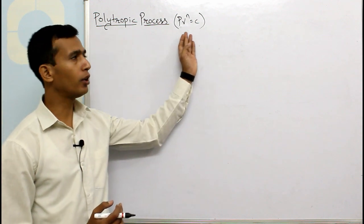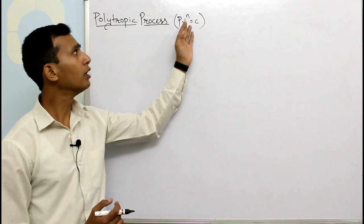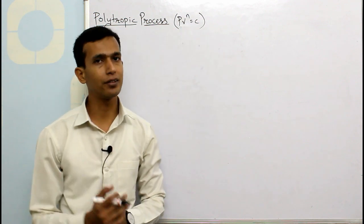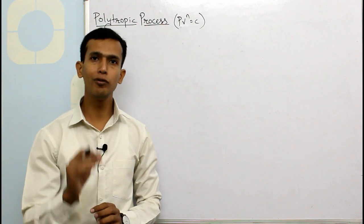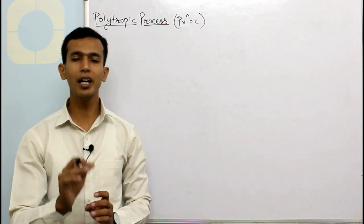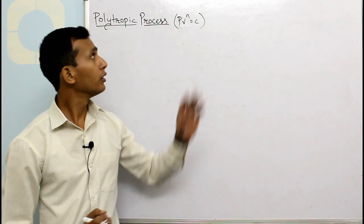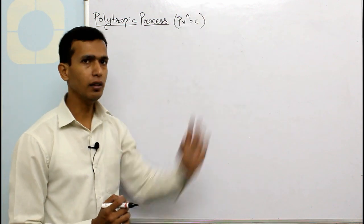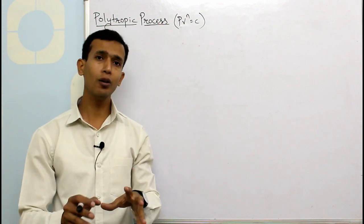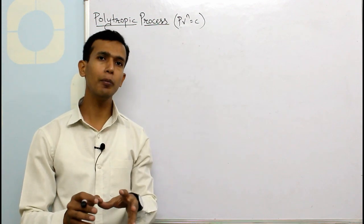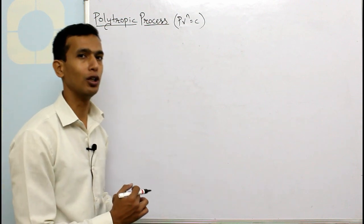This is the equation for a polytropic process: PV raised to n equals to C, and here n is called as the polytropic index. This n has a particular value for a particular process — n remains constant for a given process. The various values of n form various processes.